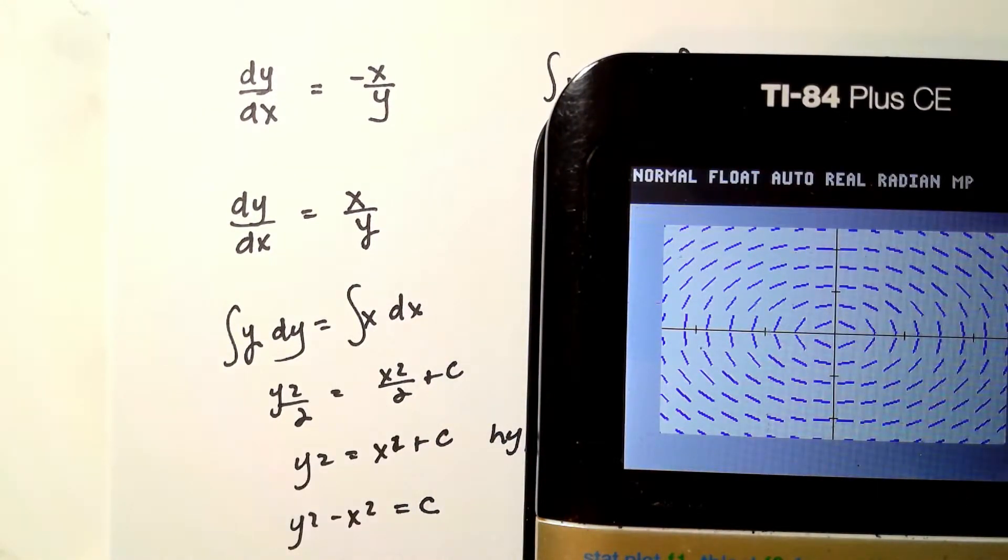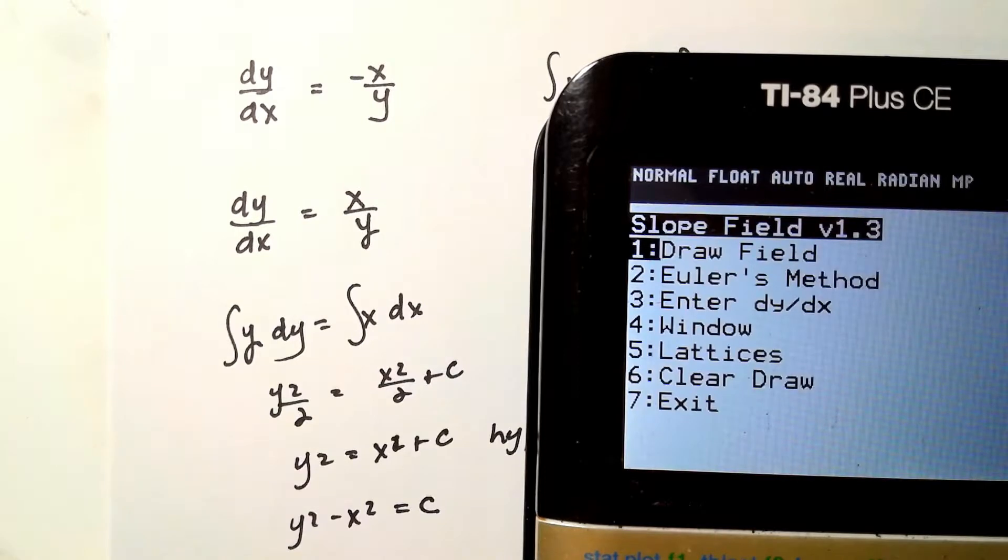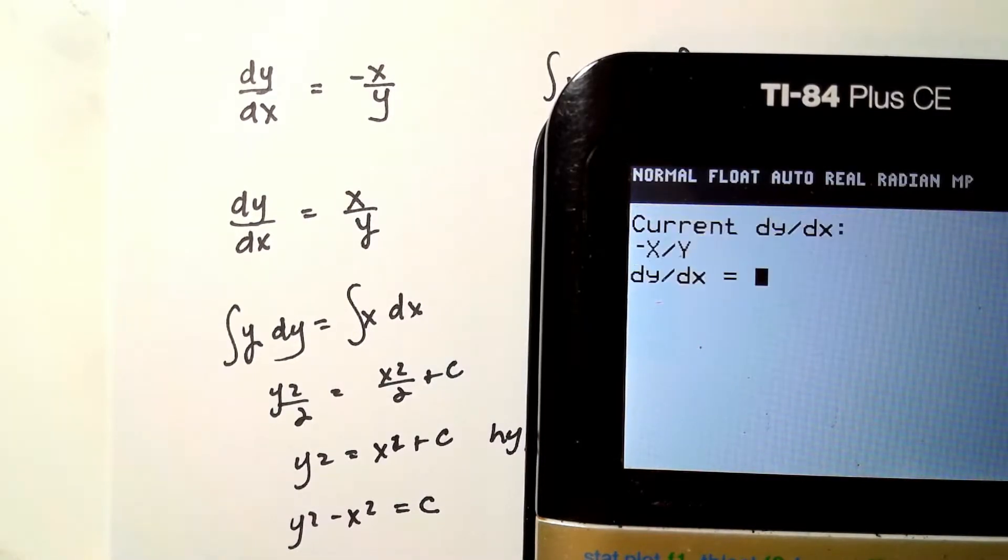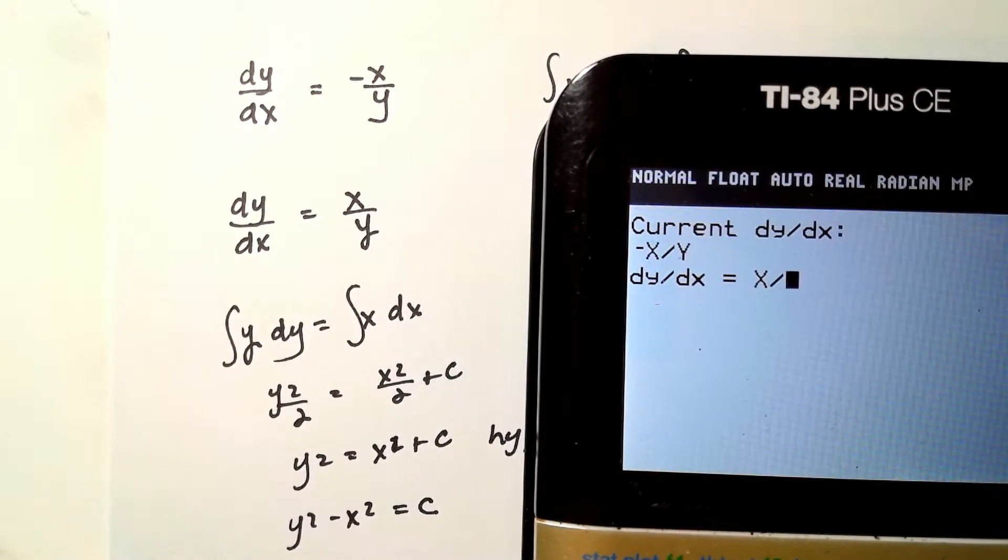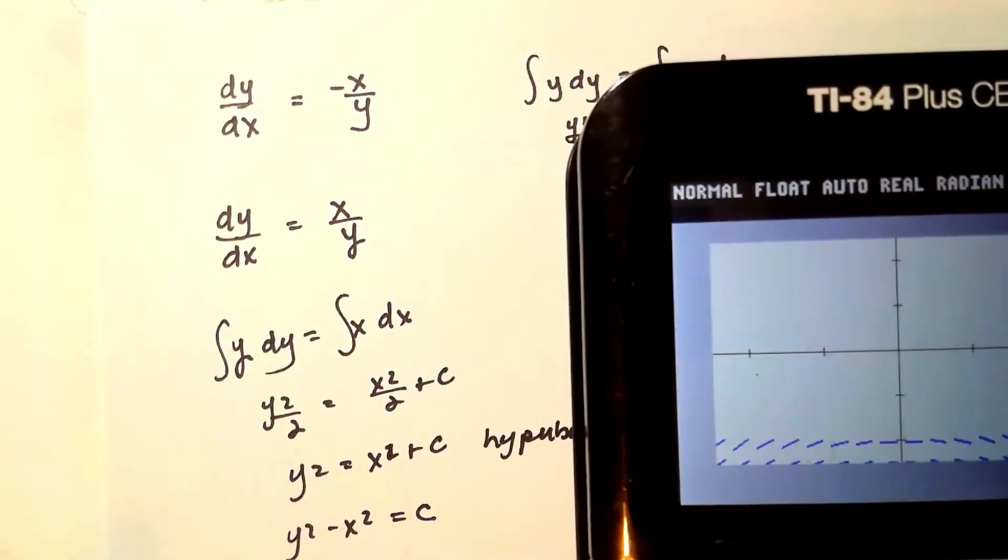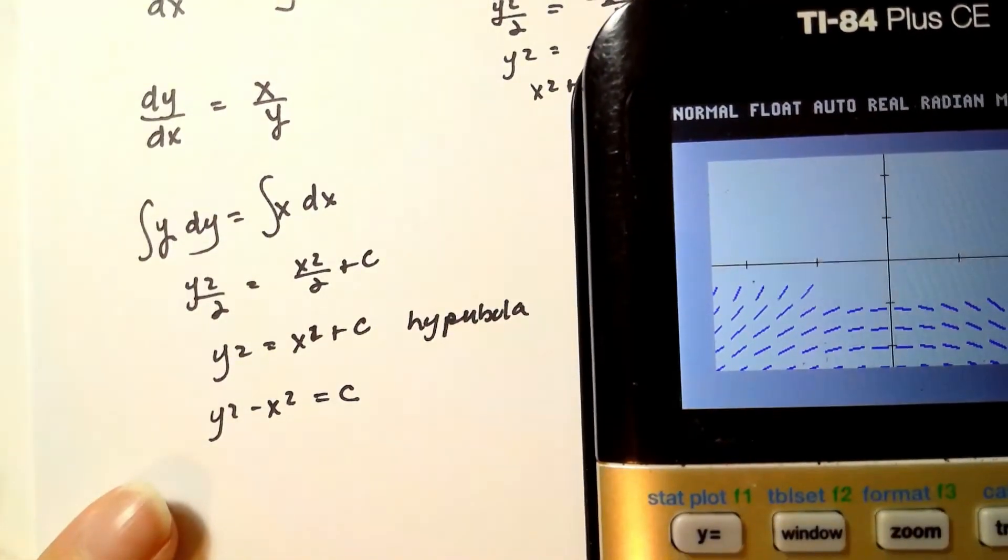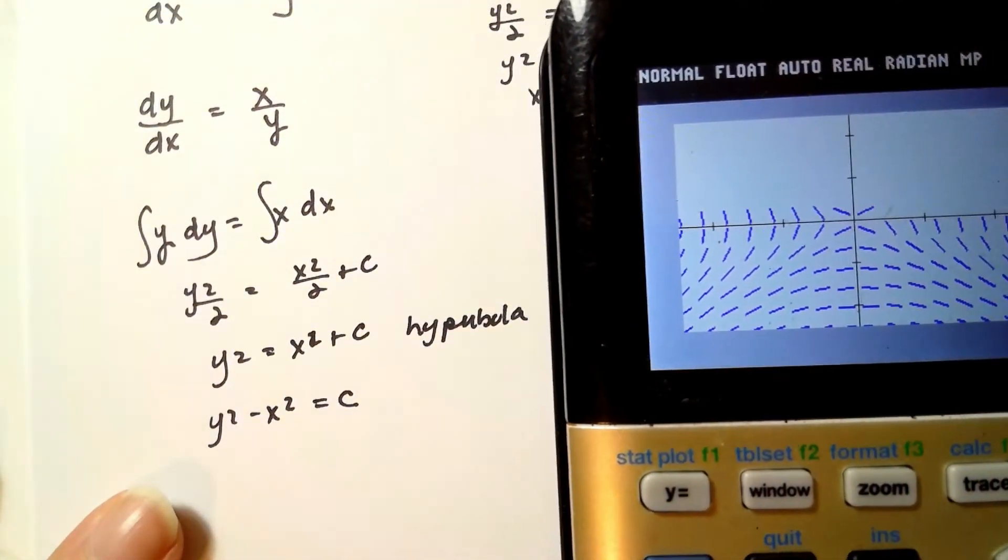The other one is positive x over y. So if I go back in and I enter dy dx, it'd be positive x divided by y and draw the field. I could do it by hand like I did on the side here. And what I get is the equation of a hyperbola.